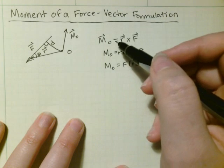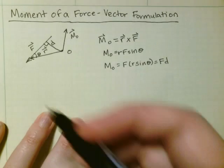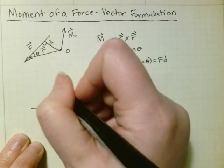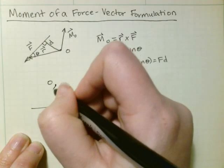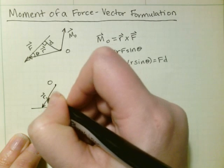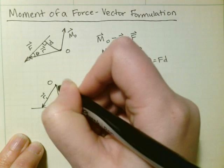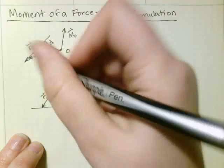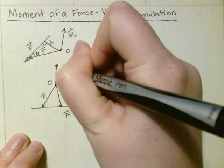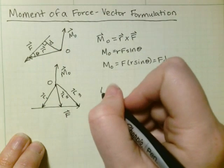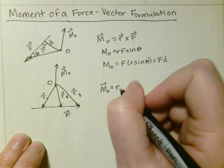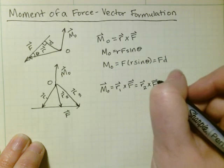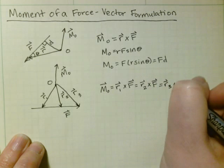But when you're looking at three dimensions, you want to use the cross product of R cross F. So let's say you had a force F and a point O. You can have any moment arm. They're all going to give you the same moment for F. So that's MO equals R1 cross F, which is the same thing as R2 cross F and R3 cross F.